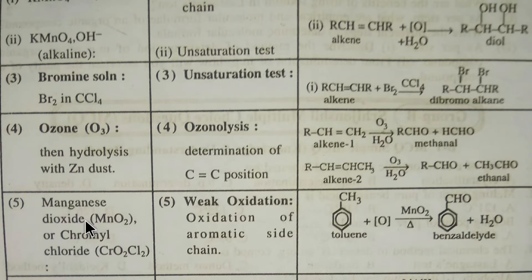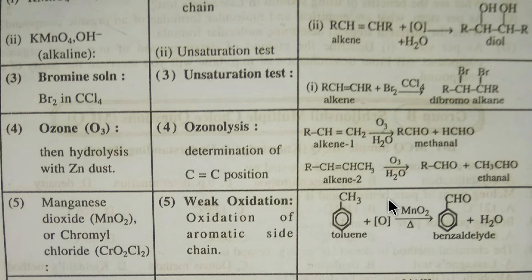Our fifth reagent is manganese dioxide (MnO₂) or chromyl chloride. It is used for the mild oxidation of aromatic side chains. For example, toluene — if we add manganese dioxide, we get benzaldehyde and water. This is a mild oxidation. Thank you for viewing this video.